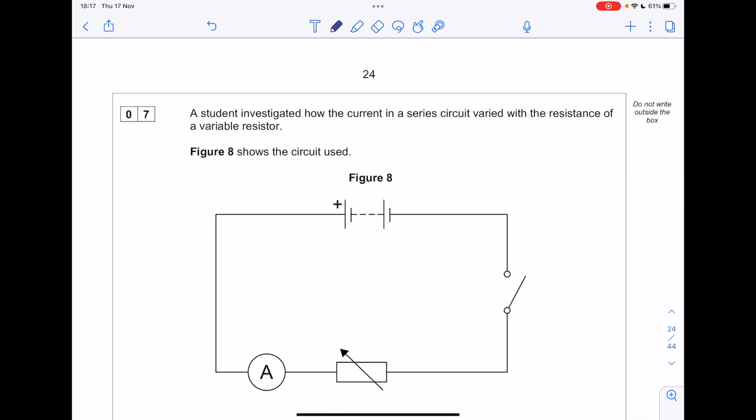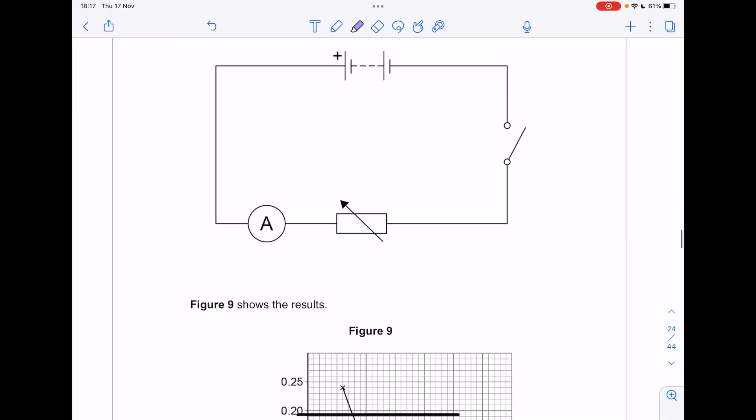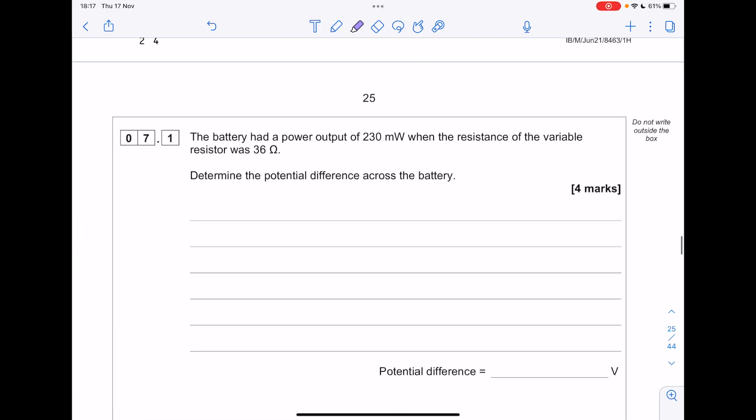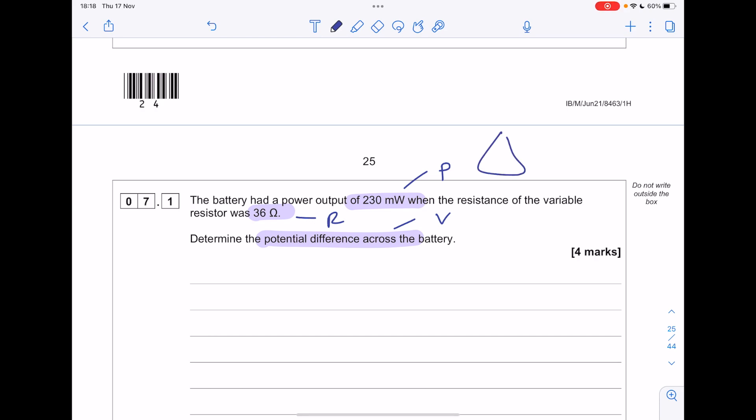I soon investigated how the current in a series circuit varied with the resistance of a variable resistor. Here's the circuit used. Here are some results of current versus resistance. The battery had a power output of 230 milliwatts when the resistance was 36 ohms. Calculate the potential difference. So we have a power value, a resistance value, and we're after V. Let's use two formula triangles: PIV and V equals IR. Because what's common in both is this current value.